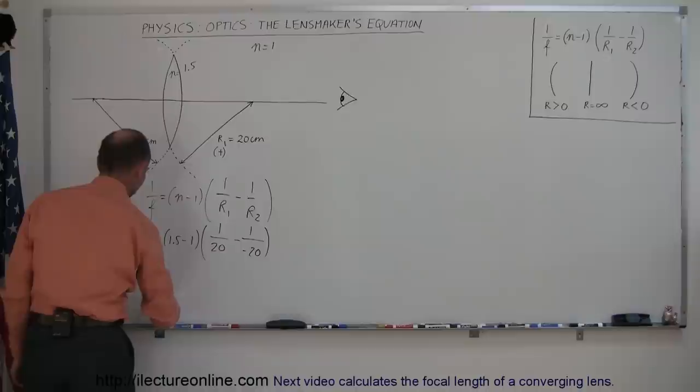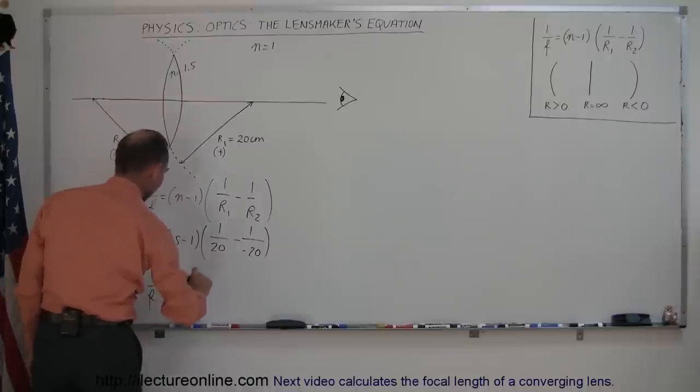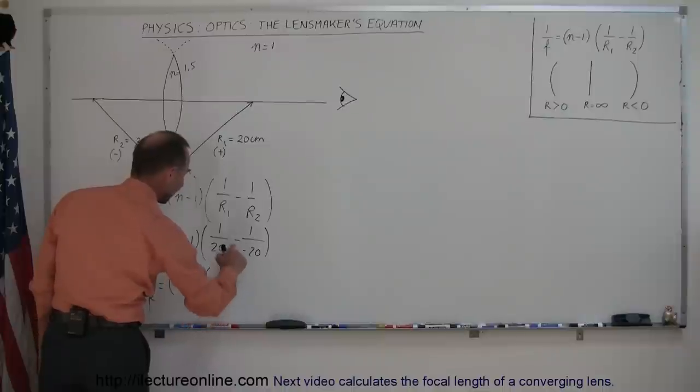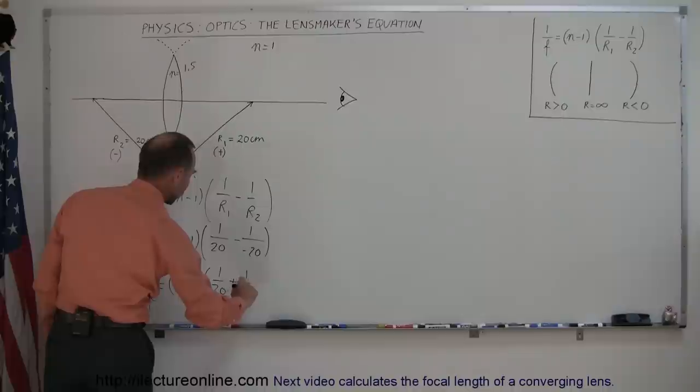Simplifying this, we get 1 over F is equal to 1.5 minus 1 is 0.5 times 1 over 20. Minus times a minus becomes a plus 1 over 20.